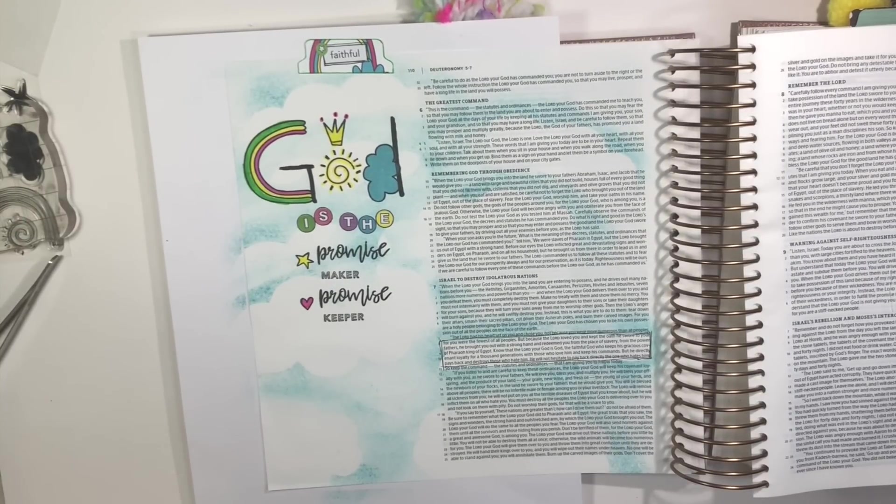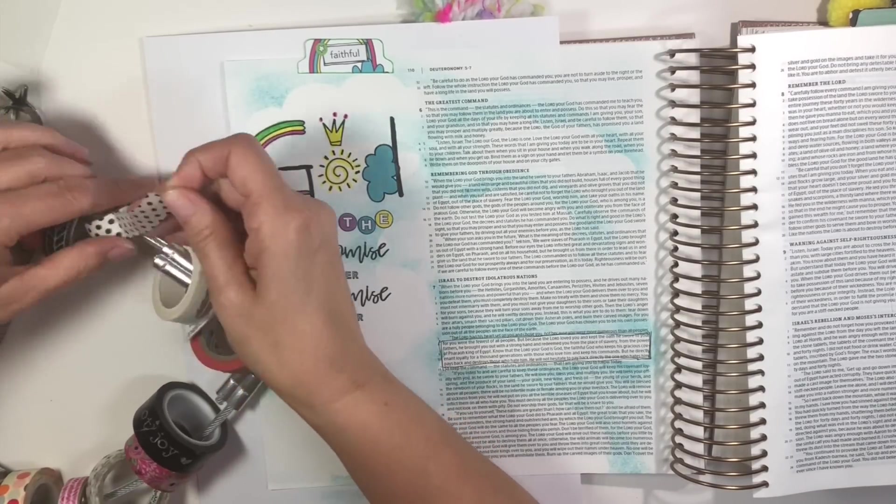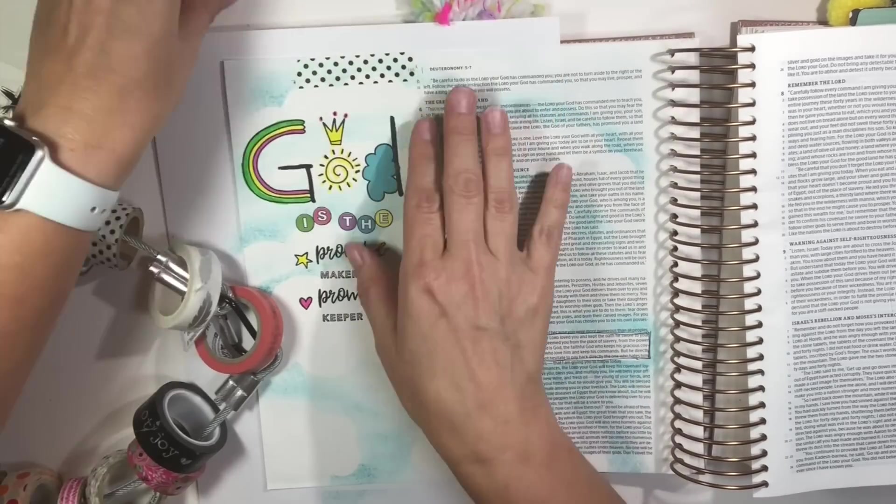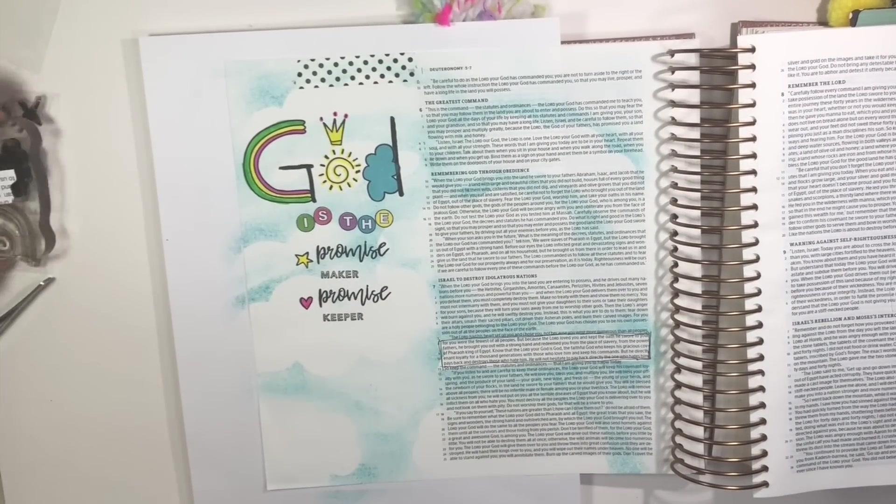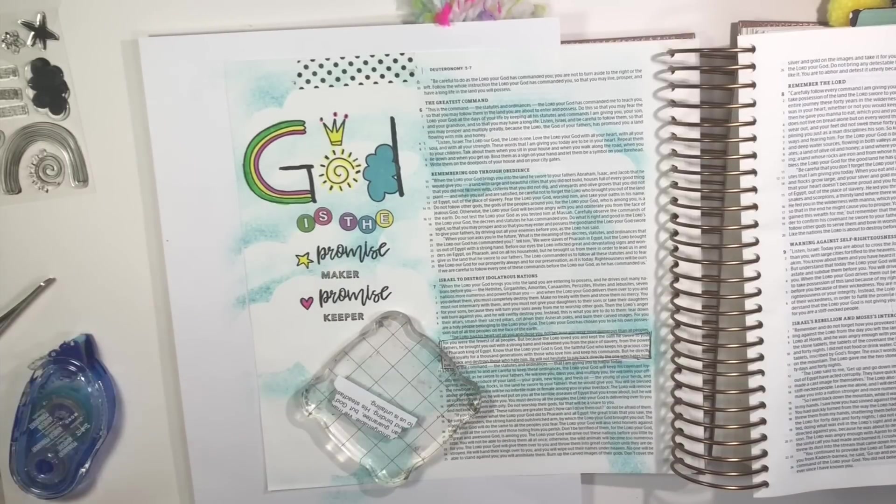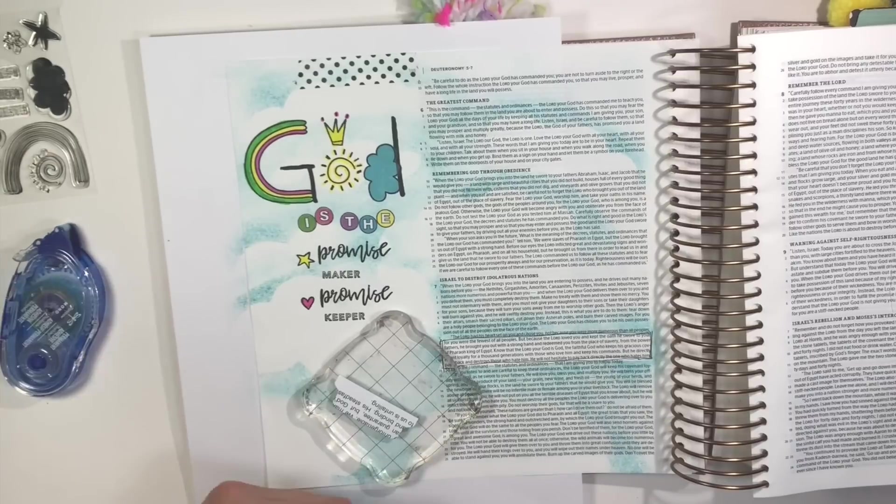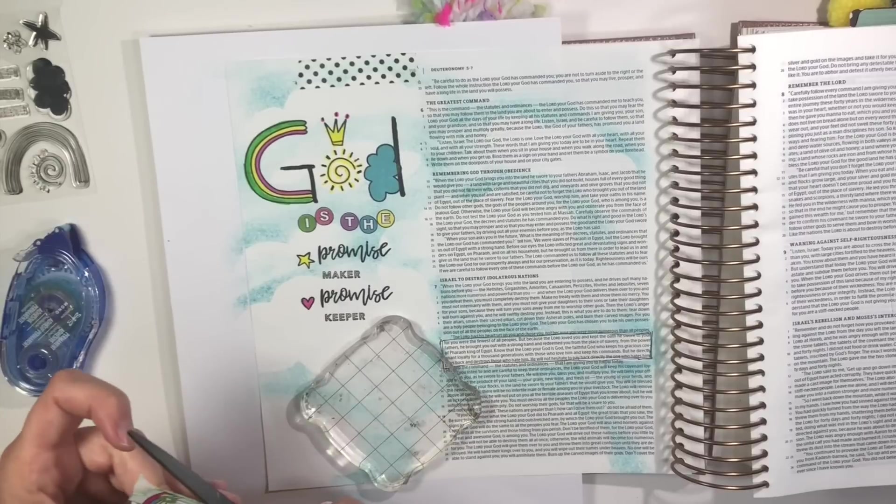So, the colors that I'm using are, let's see, I'll have them linked in the comment section, but cadmium yellow, leaf green, I think it's magenta, and then also black. Those are the colors. And then again, that blue that I use is the distress oxide Broken China. This is just some washi tape from my stash.